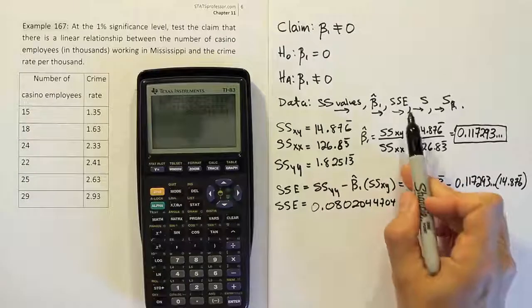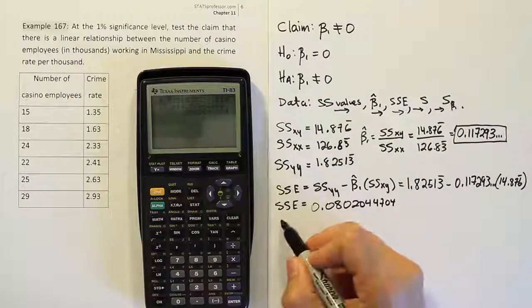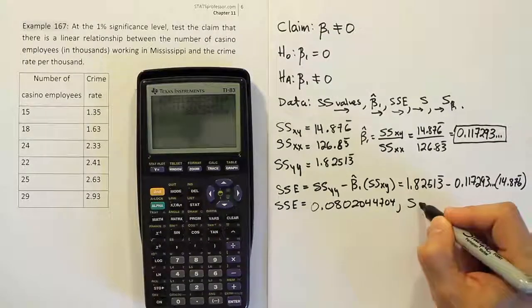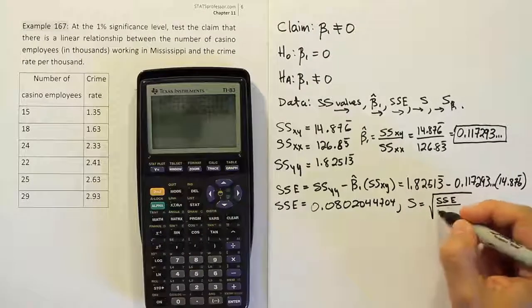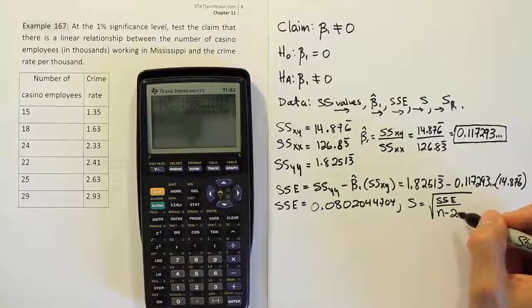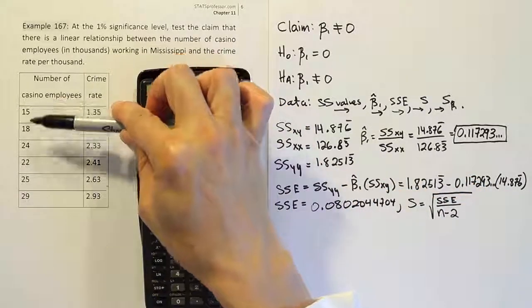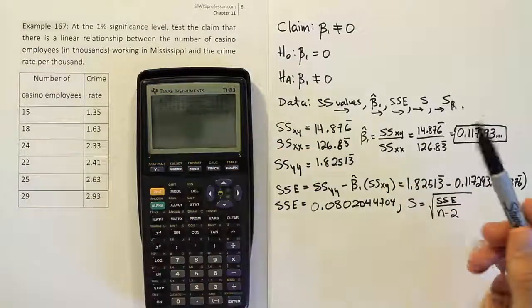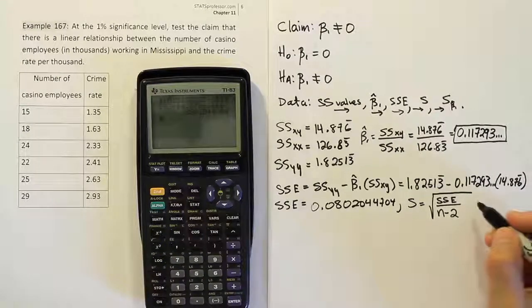Now, once you have SSE, remember we're going to take that and move on to the S calculation. So the S calculation is the square root of this SSE value that we just found divided by n minus 2. So we have SSE. What's n minus 2 though? Well, if you look at our problem, it gave us 1, 2, 3, 4, 5, 6 pairs of data. 6 pairs of data. So that's our n, then 6.